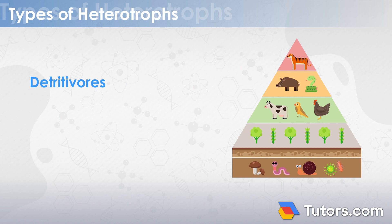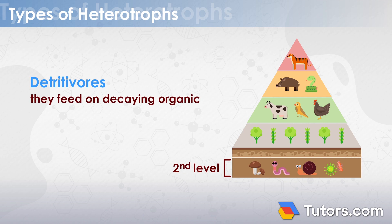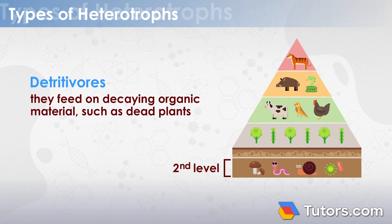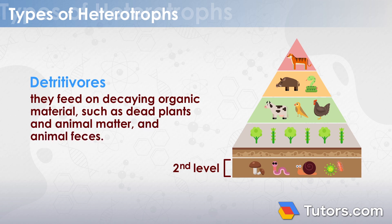Like herbivores, detritivores occupy the second level of food chains because they feed on decaying organic material, such as dead plants, animal matter, and animal feces. You can think of these as the decomposers of an ecosystem.